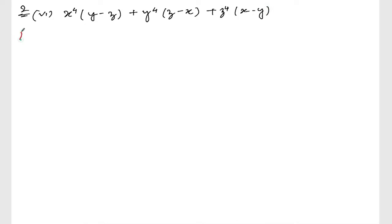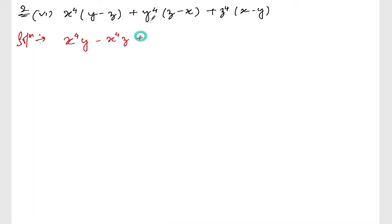Okay, solution. Let me multiply everything: x to the power 4 times y, minus x to the power 4 times z, plus y to the power 4 times z, minus y to the power 4 times x, plus z to the power 4 times (x minus y).